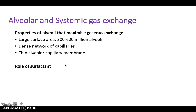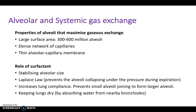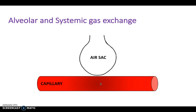Surfactant is secreted by type 2 pneumocytes; type 1 pneumocytes form the alveolar wall barrier. Surfactant keeps alveoli at normal size, prevents smaller ones from merging into larger ones, increases lung compliance, reduces surface tension, and keeps the lungs dry. Importantly, per Laplace's law, surfactant prevents alveolar collapse under increased pressure during expiration. In simple terms: oxygen comes in from the air sac to the capillary, red blood cells pick it up, and CO2 leaves back out through the bronchial tree.